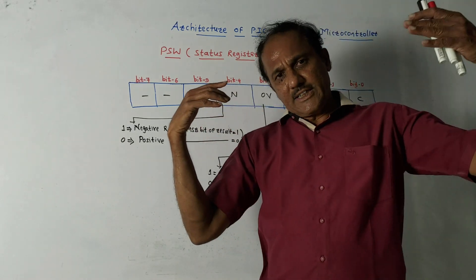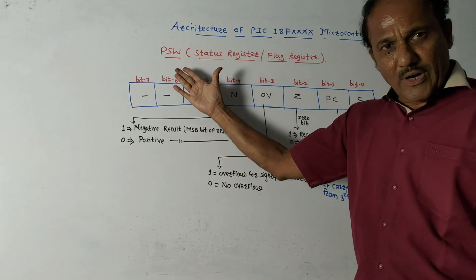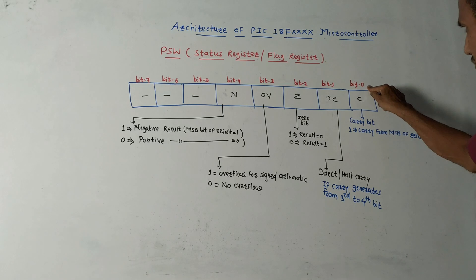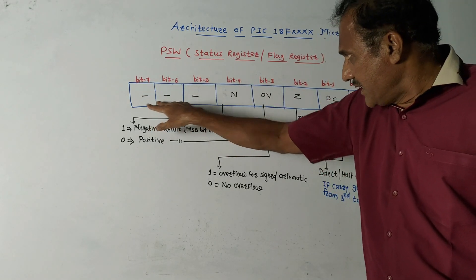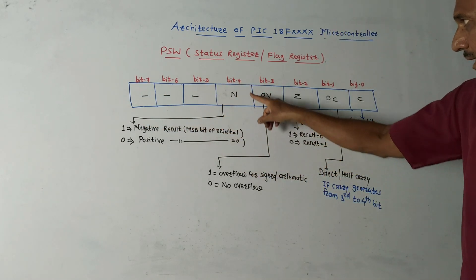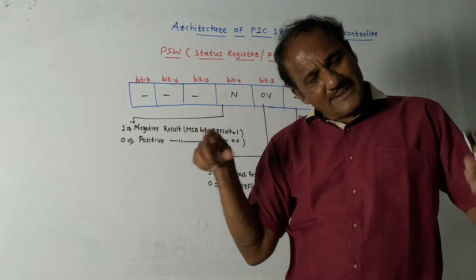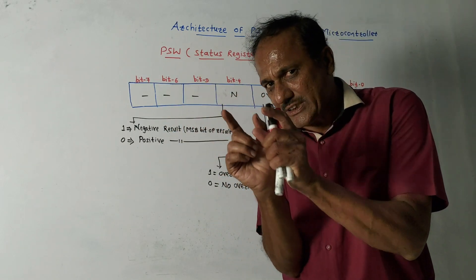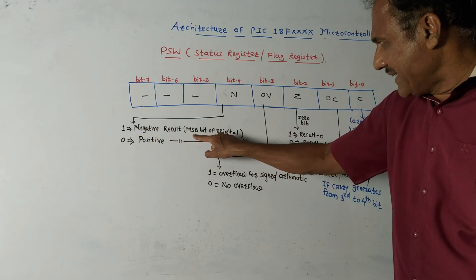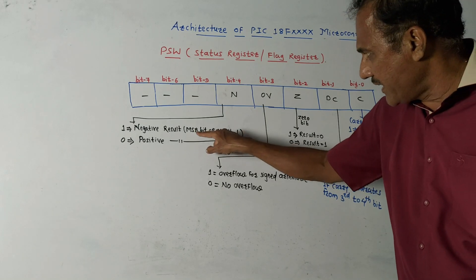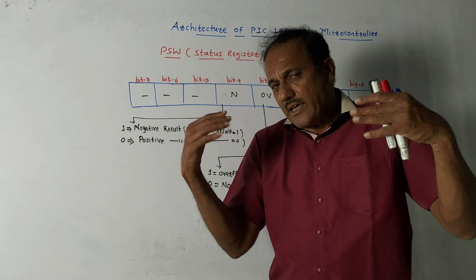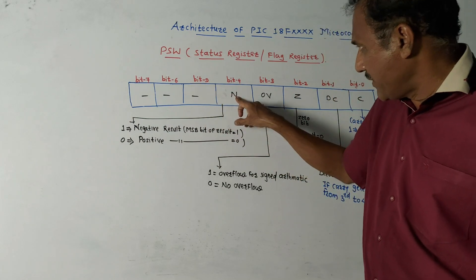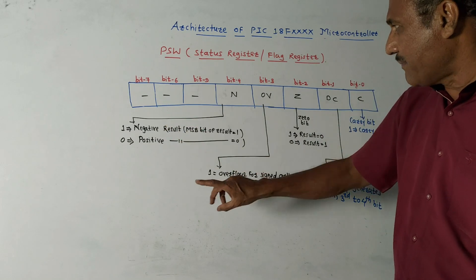The next part is PSW, that is program status word, or it is also called status register or flag register. We can expect direct question: draw the diagram for PSW and explain the functioning of each bit. It is basically 8 bit register, bit number 0, 1, 2 up to bit number 7. These three bits, bit number 5, 6, 7 are unused. Next bit number 4 is negative bit, N bit.